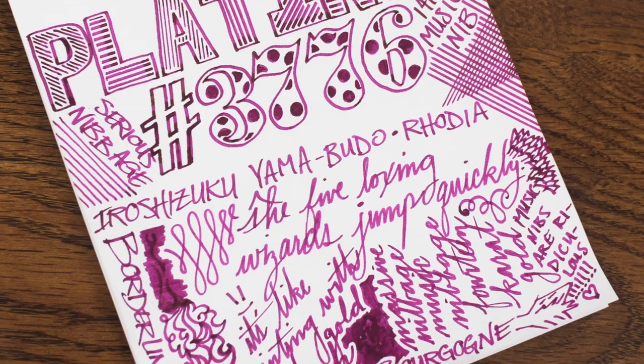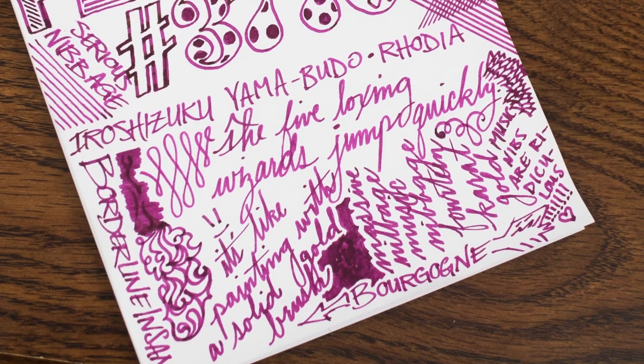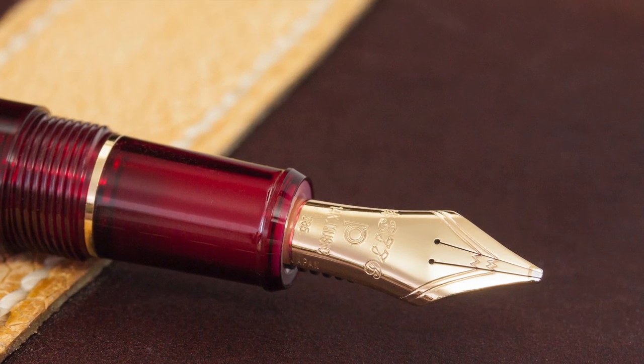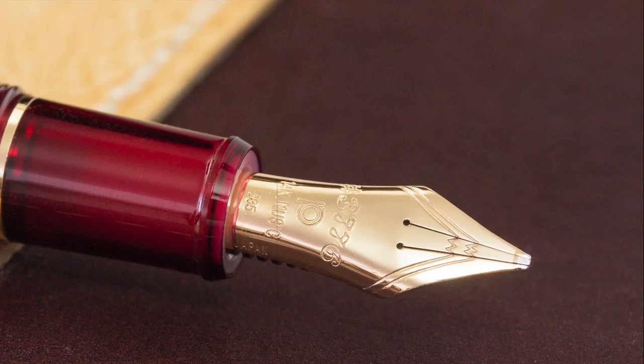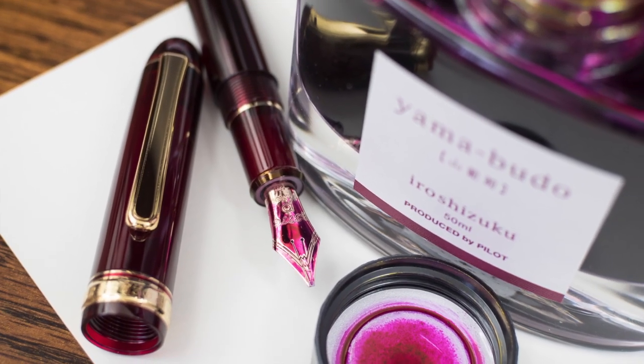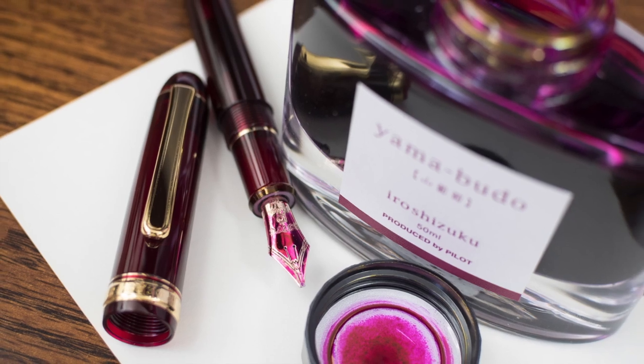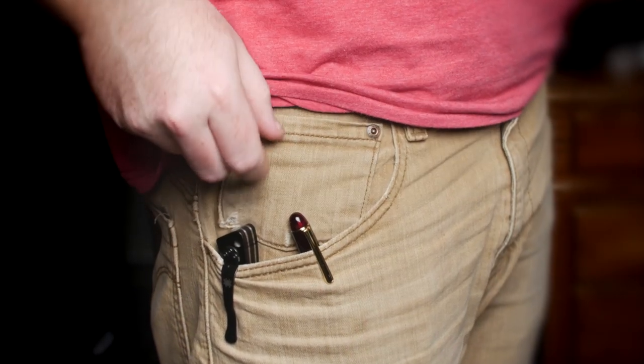I'm very pleased with the Platinum 3776 Century and I have to thank Pen Chalet for sending this one for review. The Bourgogne retails for $220 with the standard nib options and $285 with the music nib. Street prices are $176 and $228 respectively.